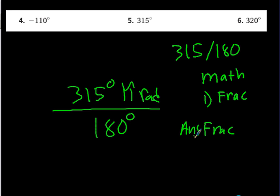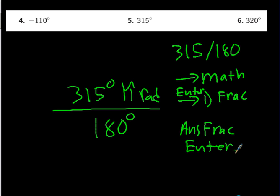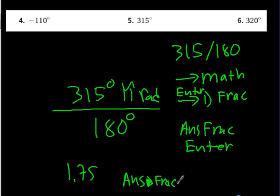On the calculator, go to MATH and the first choice is FRAC. Hit ENTER and it will change your decimal answer into a fraction. When I divided 315 by 180 I got 1.75, and after hitting MATH → FRAC → ENTER, I get 7 over 4. So the answer is 7π/4 radians.